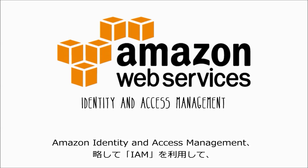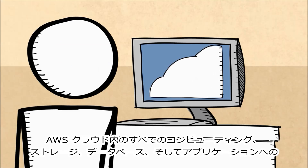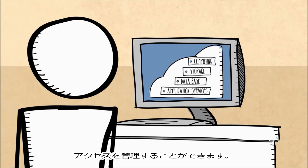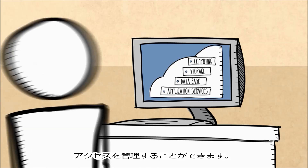Amazon Identity and Access Management, or IAM, allows you to manage access to compute, storage, database, and application services in the AWS cloud.